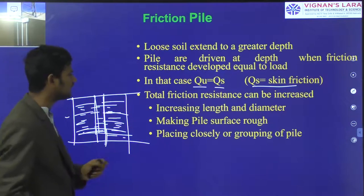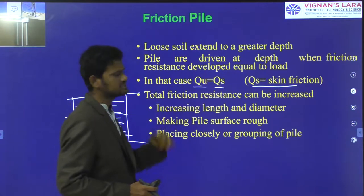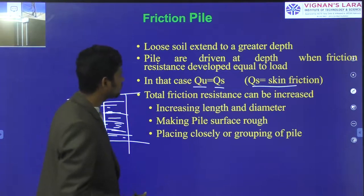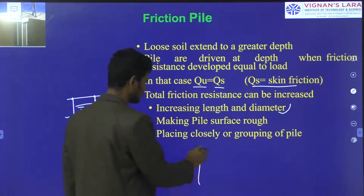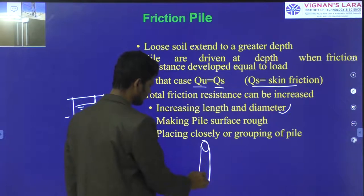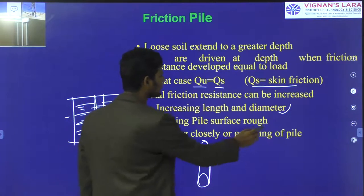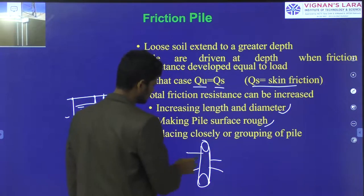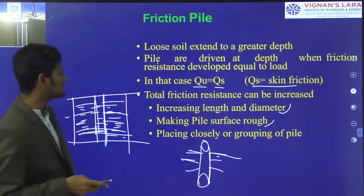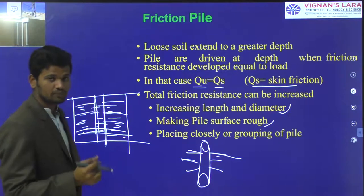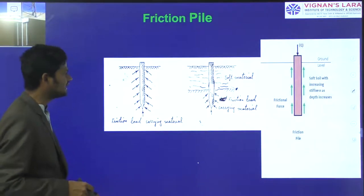In this type of loose soil, friction pile transfers the load through friction to the surrounding soil, hence the load carrying capacity may increase. In this friction pile foundation, the ultimate load carrying capacity equals the skin friction load carrying capacity. Total friction resistance can be increased by increasing the length and diameter of the pile, making the pile surface rough, and placing piles closely in a group.